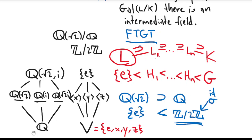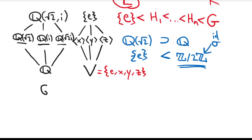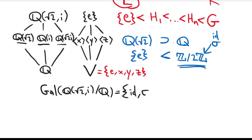These are the intermediate fields, and their elements are each fixed by certain Galois automorphisms and not by others. In the last video we were explicit about the Galois group: it contained the identity, sigma, tau, and sigma tau. Sigma sent square root of 2 to negative square root of 2, and tau sent i to negative i. Using that, you can figure out which fields are fixed by which automorphisms, matching the two lattices.